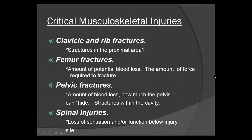Some critical musculoskeletal injuries. We're first going to look at the clavicle and ribs. Under your clavicle, you've got the subclavian artery, so you have to be very careful not to manipulate it if at all possible. Rib fractures carry the risk of puncturing a lung or the heart, any one of the chambers of the heart. As well, running along the inside of every rib are some pretty serious blood vessels — both arteries and veins. So you have to be very careful with clavicle and rib fractures.